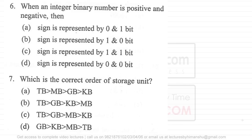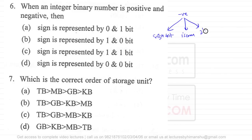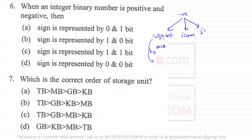Question six asks about representing positive and negative integer binary numbers. There are three ways of representing negative numbers in computer science: sign bit representation, one's complement representation, and two's complement representation. In sign bit representation, if the most significant bit (MSB) is 0 the number is positive, and if the MSB is 1 the number is negative.